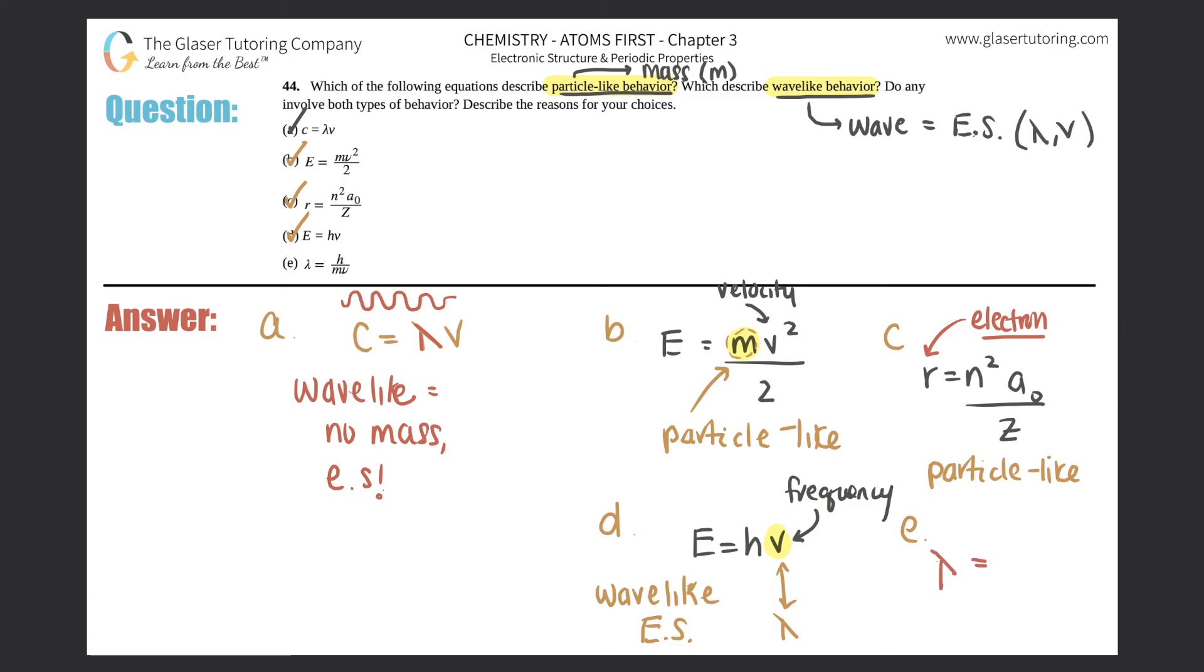Wavelength equals H over MV. Now here, what do you guys think? We see that we have wavelength. So clearly this is wave-like. We're talking about wavelength. So this is wave-like. Right? So this is talking about part of the electromagnetic spectrum. We're talking about waves.